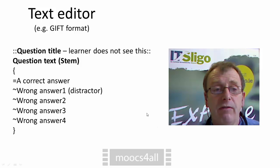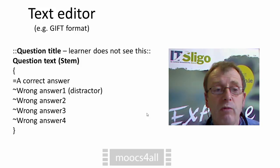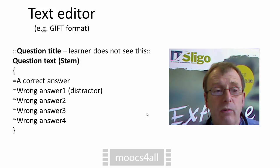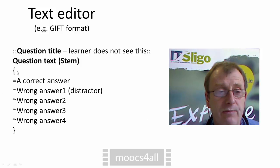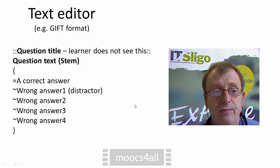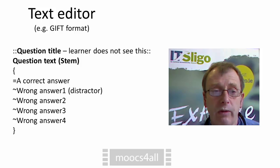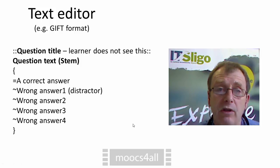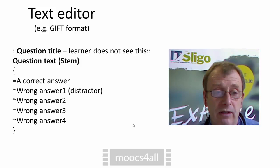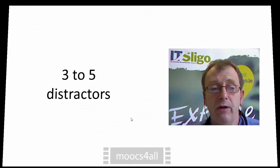Here's an example of the GIFT format where you might write a question title for yourself — the learner doesn't see that. Then you write the stem of the question, the question text. Within the curly braces, you have a correct answer with an equal sign in front of it, and the approximately-equal sign in front of the incorrect answers, also known as the distractors. You can type this out very quickly once you get used to it. When you import it into your platform, you should be able to edit it then if you're not happy with it.